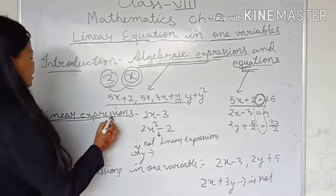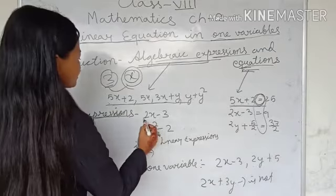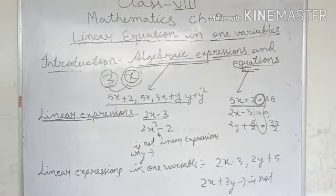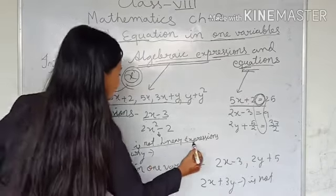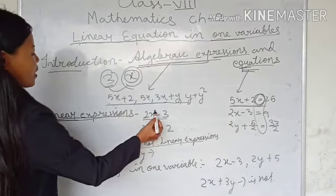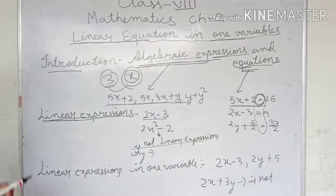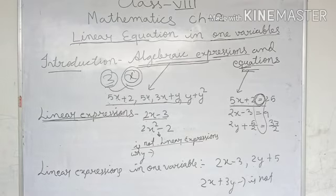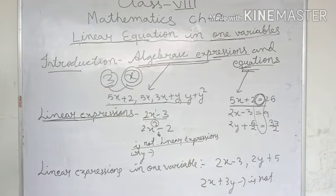Now come to linear expression. An example is 2x minus 3 — this is a linear expression. Again, 2x squared minus 2 is not a linear expression. Why? Here you can see the power is 1, and in the next expression the power is 2. So if the power is 2, that will not be a linear equation. For a linear equation the highest power should be 1.